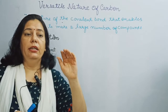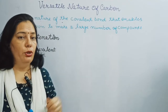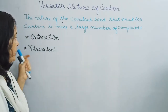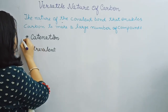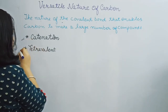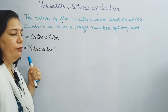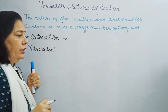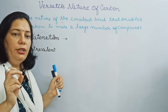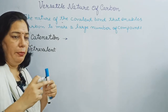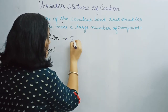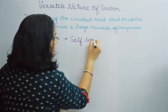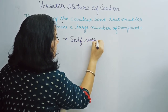Because of this property, carbon forms a large number of compounds. In this context, carbon shows two properties: first is catenation, and second is tetravalency. The word meaning of catenation is self-linking capacity.